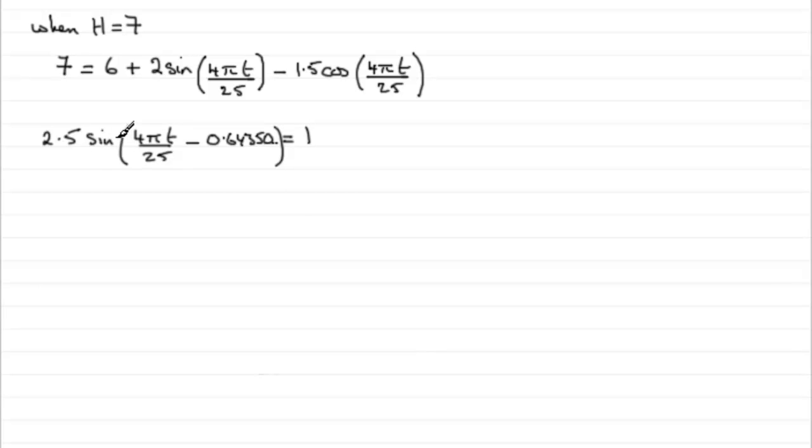Now, to work out the next bit, we divide both sides by 2.5, and if we do that, we'll therefore have the sine of 4 pi t over 25 minus 0.64350 and so on is equal to 1 divided by 2.5. What is 1 divided by 2.5? Well, it turns out to be 0.4.